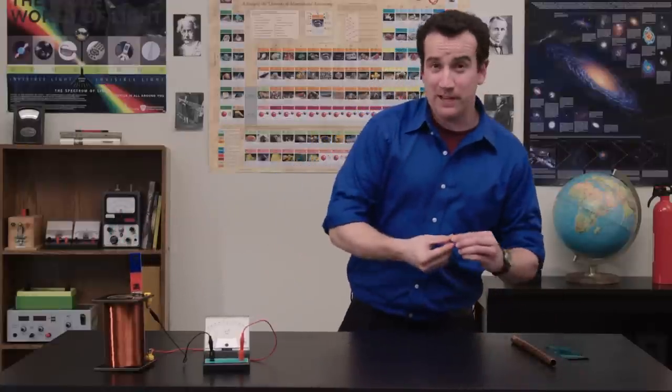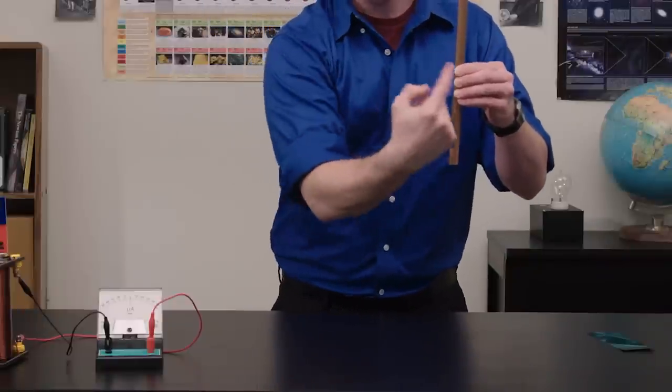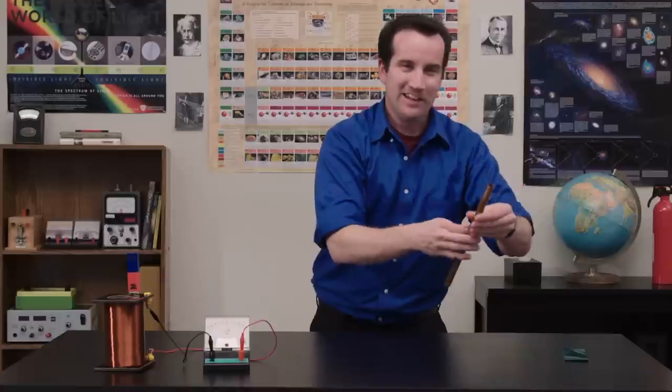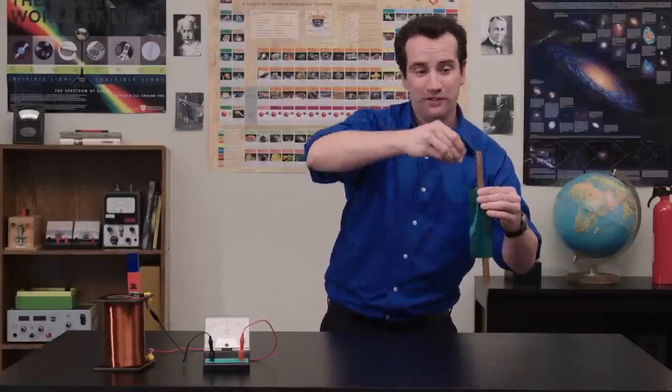Or, if I drop this magnet into this copper tube, it will fall slowly because it generates current on its way down. Now, you can actually see the falling magnet if you add this magnetic field viewing film.